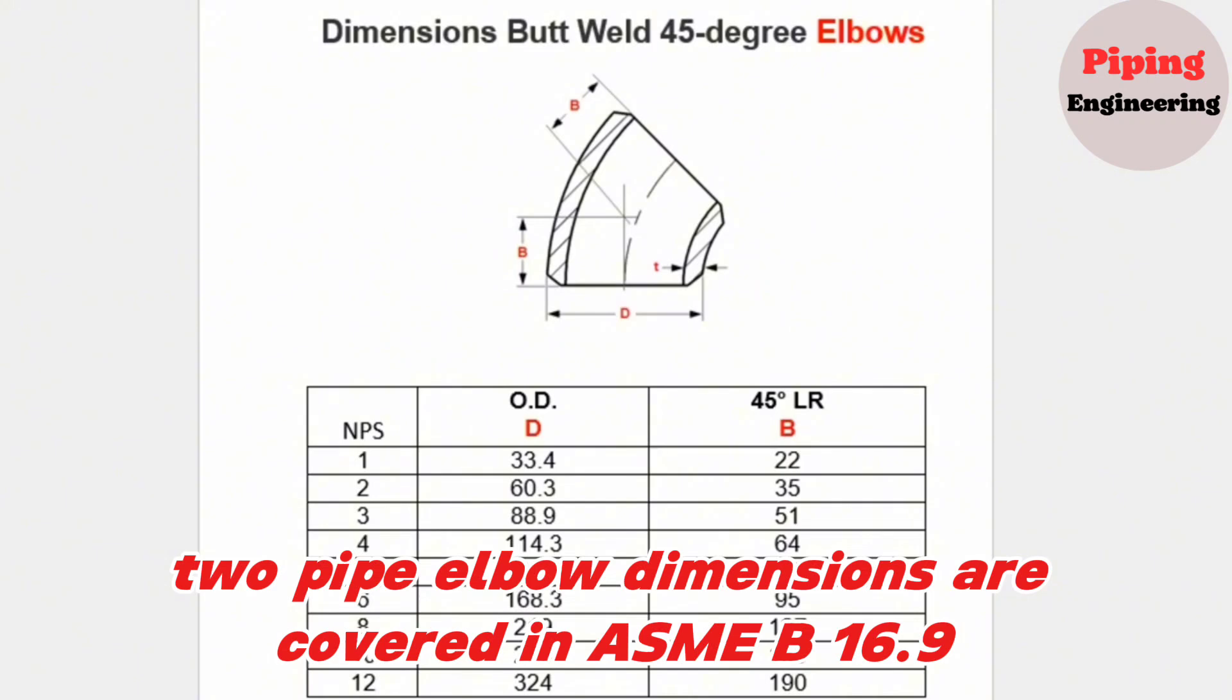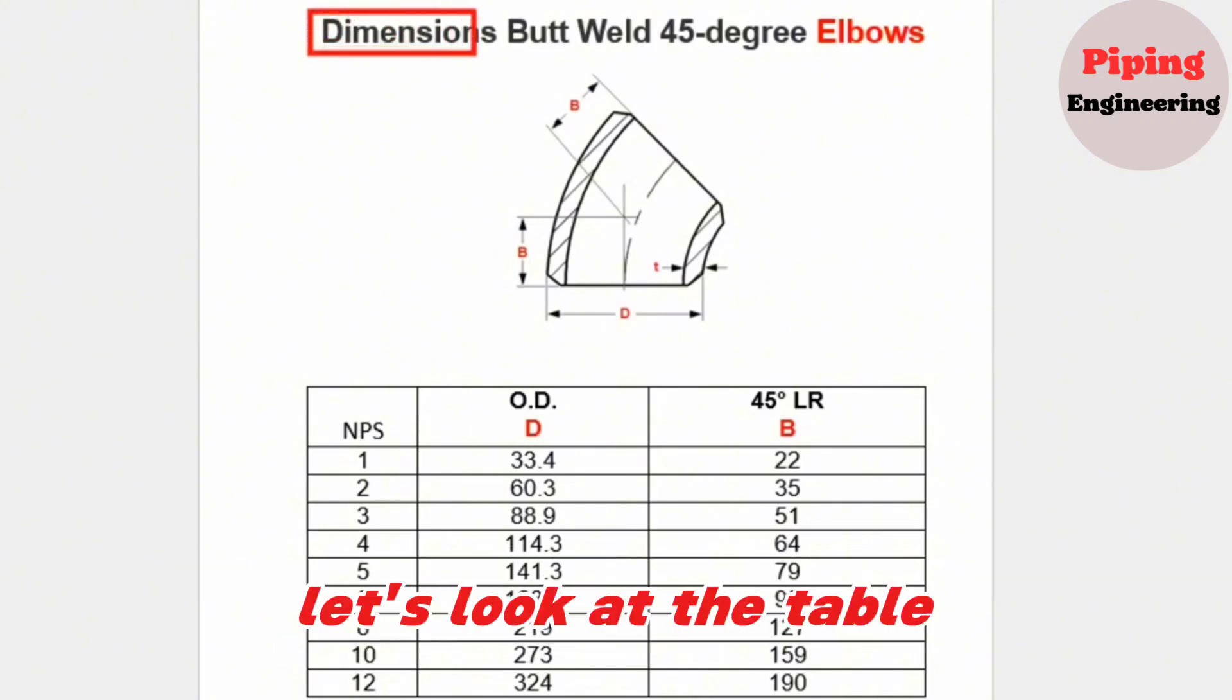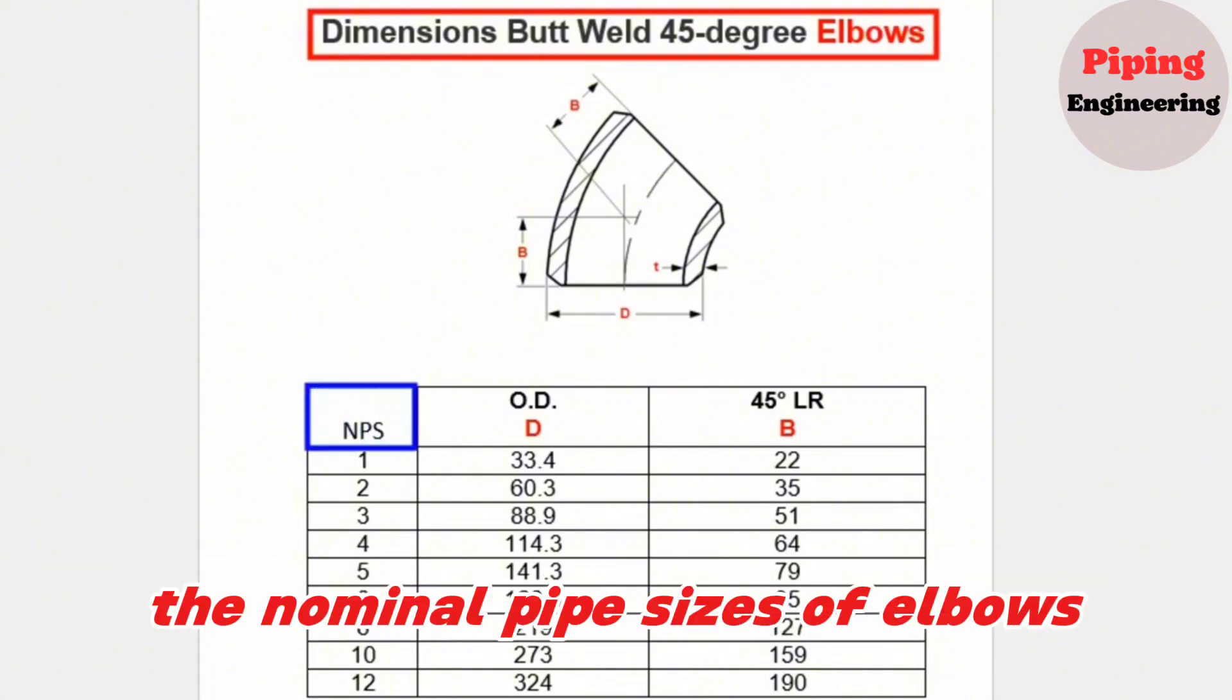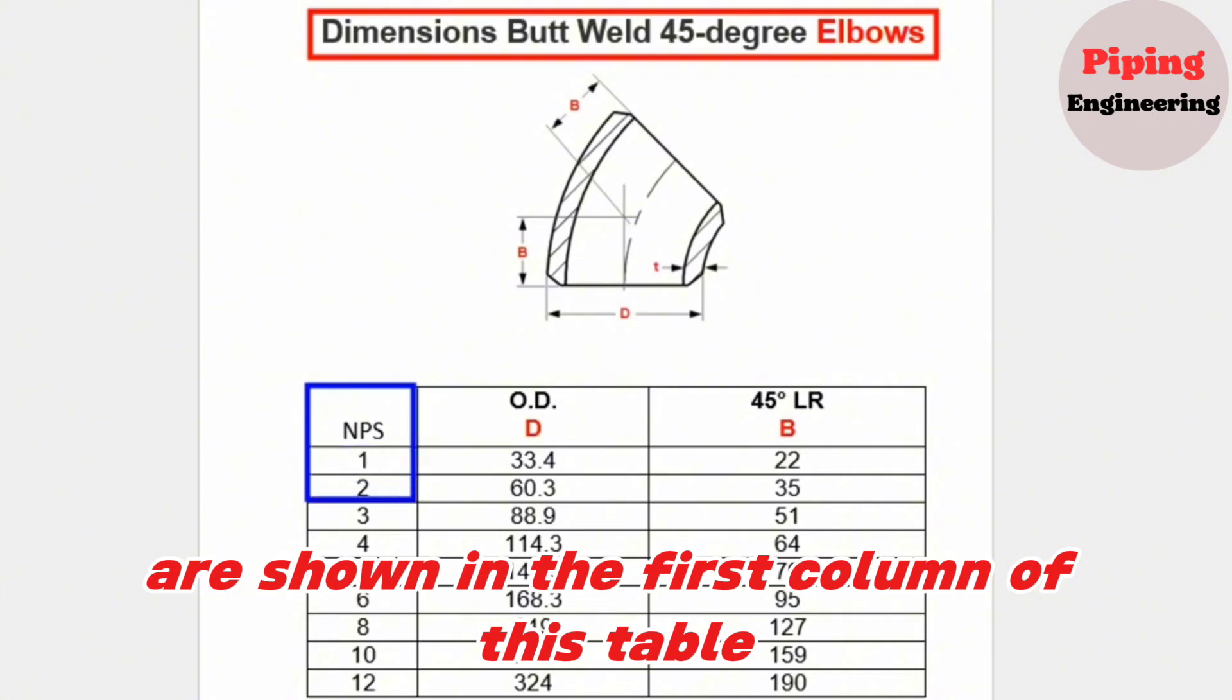Pipe elbow dimensions are covered in ASME B 16.9. Let's look at the table given for butt weld 45-degree elbows size 1 to 12. The nominal pipe sizes of elbows are shown in the first column of this table.